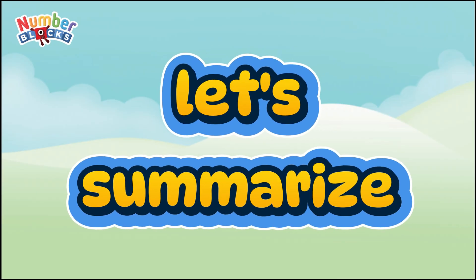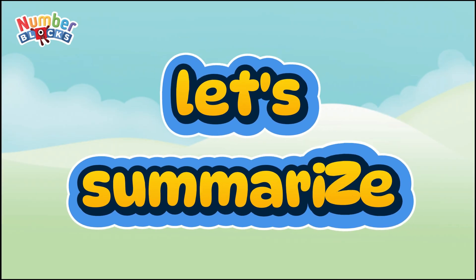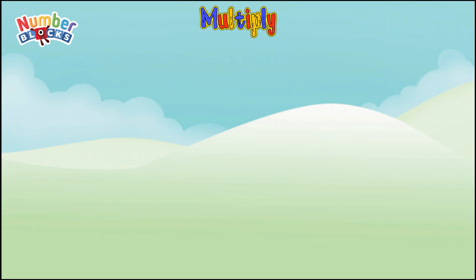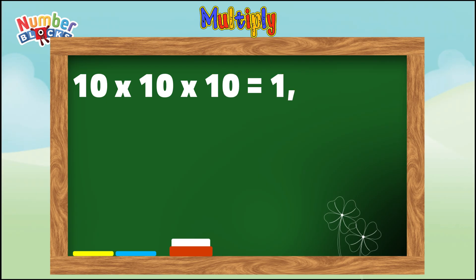Join me and let's summarize. Let's multiply. Ten times ten times ten equals one thousand.